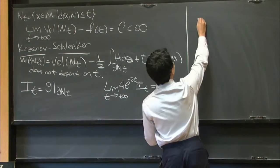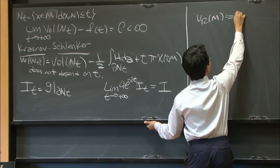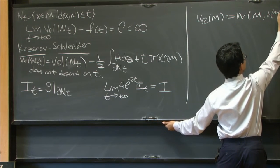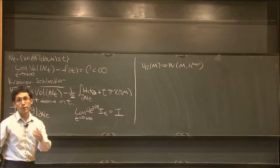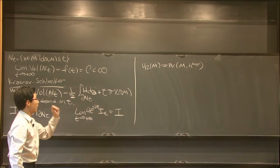So what is a good way of selecting a metric in a given conformal class? We can just take the metric with constant curvature. In this case, it's going to be the hyperbolic metric.